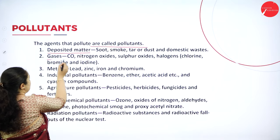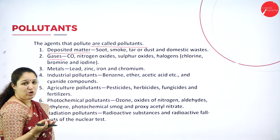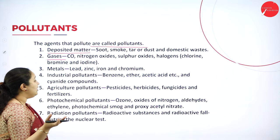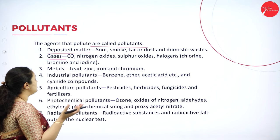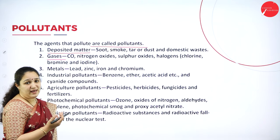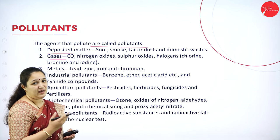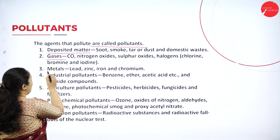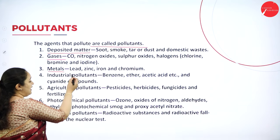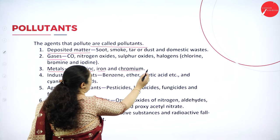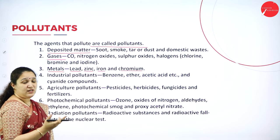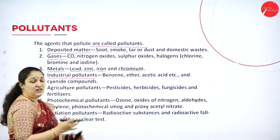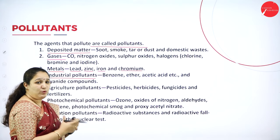Types of pollutants include gases like carbon monoxide, nitrogen dioxide, sulfur dioxide, sulfur trioxide, and halogens containing chlorine, bromine, and iodine — these gases act as pollutants. Then we have metals like lead, zinc, iron, chromium, and mercury which are also pollutants.